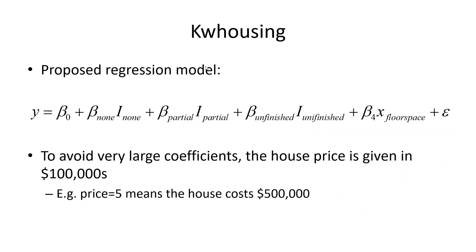Here is the proposed regression model: price is a function of indicators for basement type (none, partial, unfinished—I left out finished), floor space, and epsilon as usual. To avoid very large coefficients, house prices are given in $100,000s, so a predicted price of 5 means the house costs $500,000. This is purely to avoid large coefficients; nothing changes here.